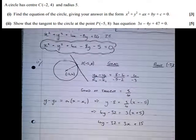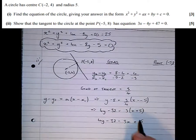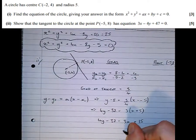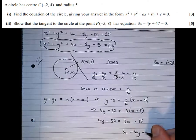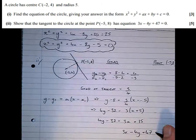Then let's take everything to the left-hand side, which gives us 3x - 4y + 47 = 0.